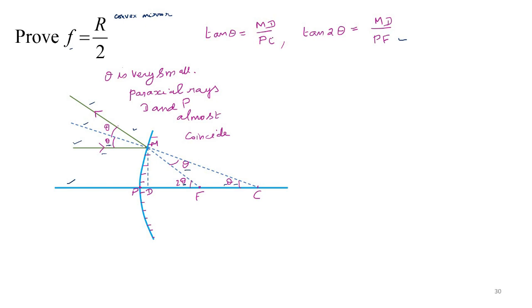Similarly, here also, tan theta is MD by PC. Actually, tan theta is MD by DC. But D and P almost coincide. So we can write PC.